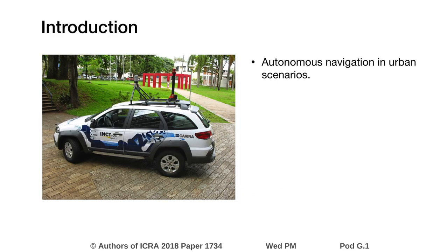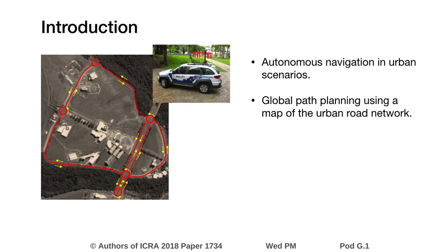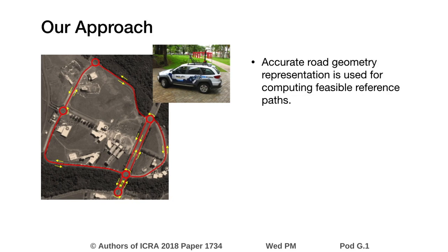Door-to-door navigation is an expected feature of autonomous vehicles driving in urban scenarios. For this problem, the vehicle should be able to compute a path to achieve the goal destination from its current position. A map with geometric information of the road network is used to compute a reference path which is feasible to be followed by the vehicle and which provides comfort to passengers.